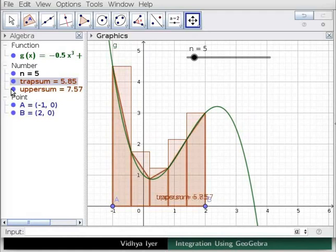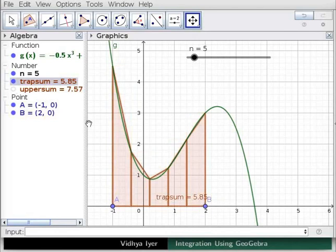We will type the same values as before and press enter. In algebra view, uncheck upper sum to hide it in graphics view. Note the shape of the trapezoids.